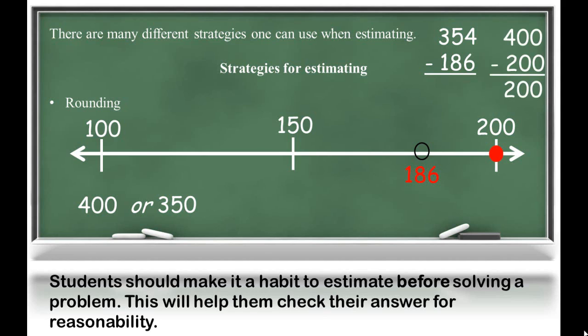So now 400 minus 200 gives me 200, which is an estimate for 354 minus 186. This will help to tell students if their answer is reasonable.